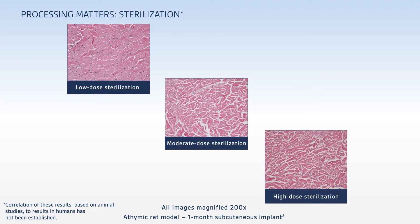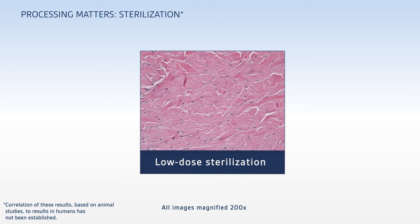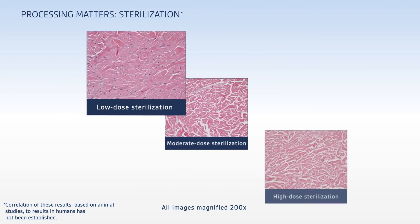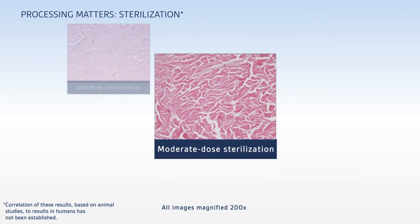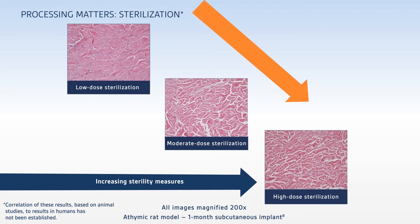It took a significant amount of time and effort to determine a sterilization dose that would give us the optimal balance of regeneration and sterility. These histologic images from a preclinical animal study compare the results of different irradiation doses after one month of implantation — we see some dose-dependent differences pretty clearly. Lower dose sterilization, specifically the E-beam irradiation used to terminally sterilize Alloderm, maintains the native dermal architecture and consistent host fibroblast infiltration, indicative of regeneration. But as the doses get higher, we see a noticeable change in dermal morphology, as well as a decrease in fibroblast cell infiltration into the matrix. So in these preclinical studies, as the sterilization dose increases, the host response becomes poorer.